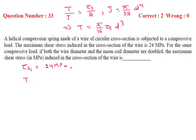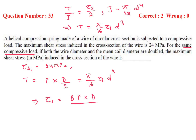We know torque equals force into distance. The load applied is P; for the same compressive load, let it be P, into distance D by 2 (mean coil radius). This equals pi by 16 times tau S times D cubed. This involves both transverse shear and torsional shear. Solving, tau S equals 8P times D divided by pi times D cubed, so tau S1 equals 24 MPa.